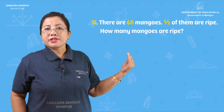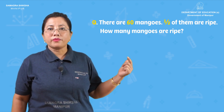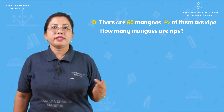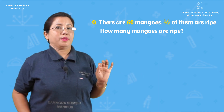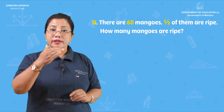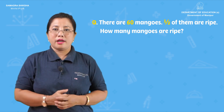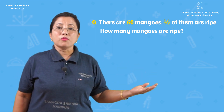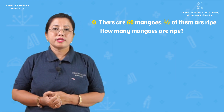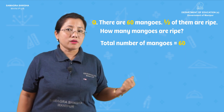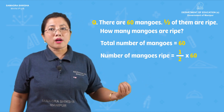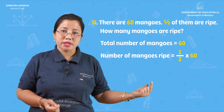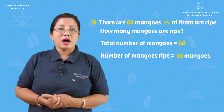There are 60 mangoes and half of them are ripe. How many mangoes are ripe? The total number of mangoes is 60. The number of ripe mangoes is half of 60: one half into 60 equals 30 mangoes.